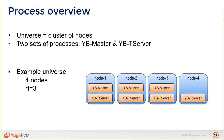A universe is a cluster in YugaByte. In advanced deployments with read replicas, you can have multiple clusters inside a universe — a primary cluster and several read replicas — but the whole deployment is called a universe. There are two processes which form their own distributed systems and become two services: the YB-Master and the YB-TServer (tablet server). In a four-node cluster with replication factor three, there are as many masters as the replication factor and as many tablet servers as there are nodes.